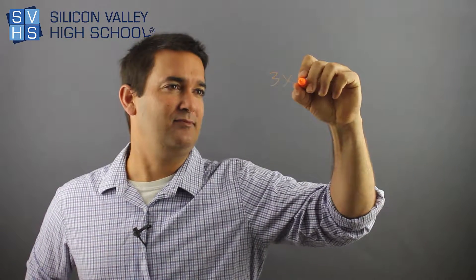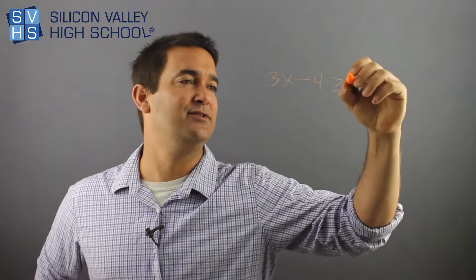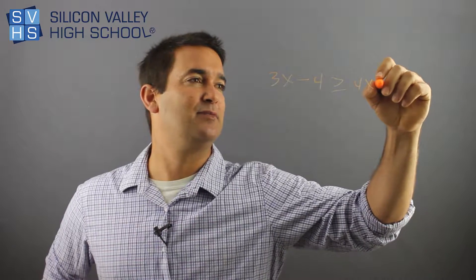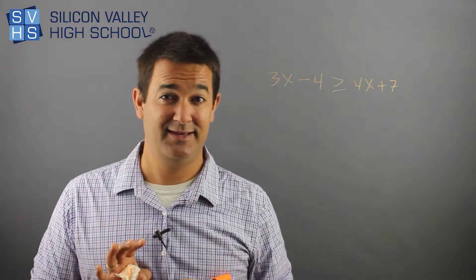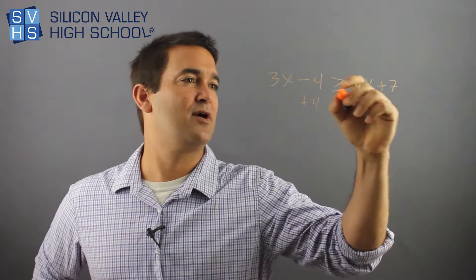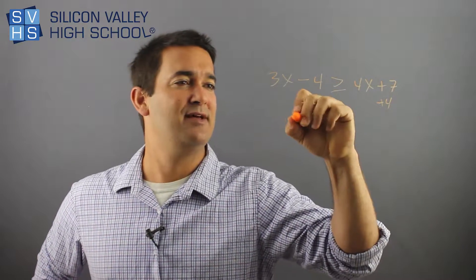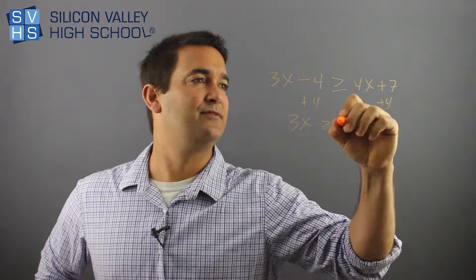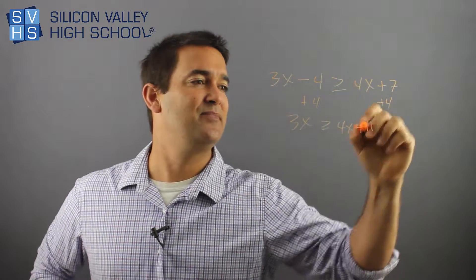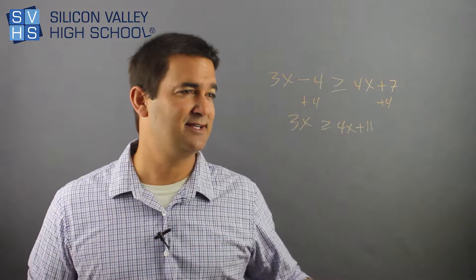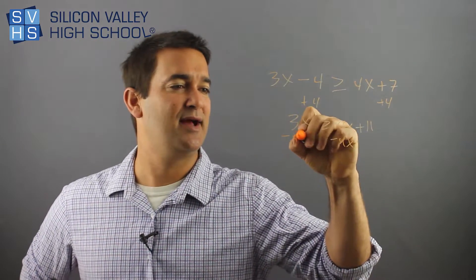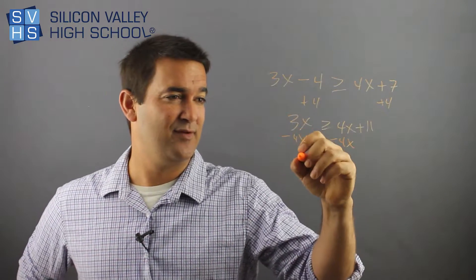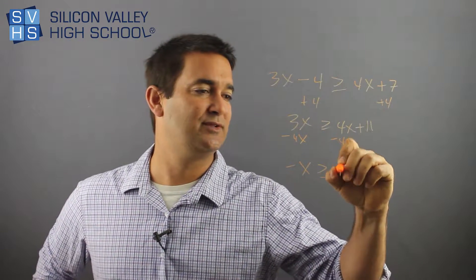What if you had 3x minus 4 is greater than or equal to 4x plus 7? I'm just going to do my thing. So plus 4, plus 4 — I have 3x greater than or equal to 4x plus 11. Now, I'm going to get that 4x to the other side: minus 4x, minus 4x. I'm left with negative x greater than or equal to 11.